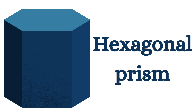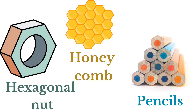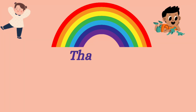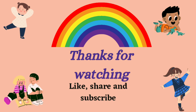Next shape is hexagonal prism. This is the shape of a hexagonal prism. Let us see some few examples of hexagonal prism: hexagonal bolt, honeycomb, pencils. These are the very few examples for that shape. Thanks for watching. Please like, share and subscribe.